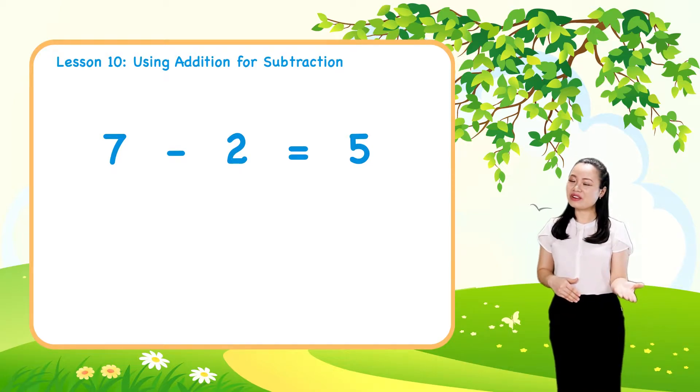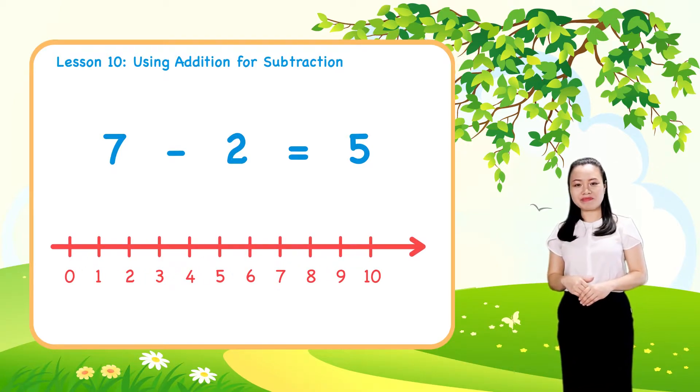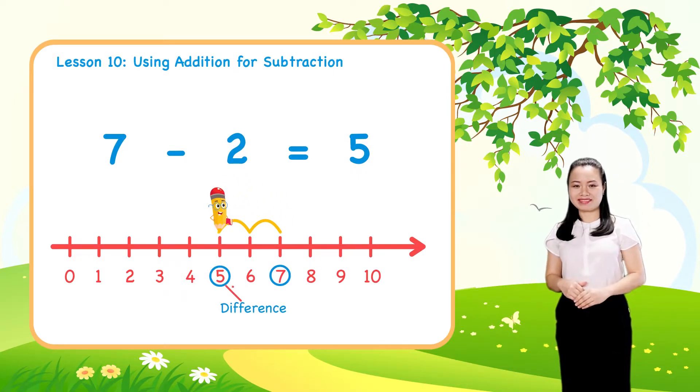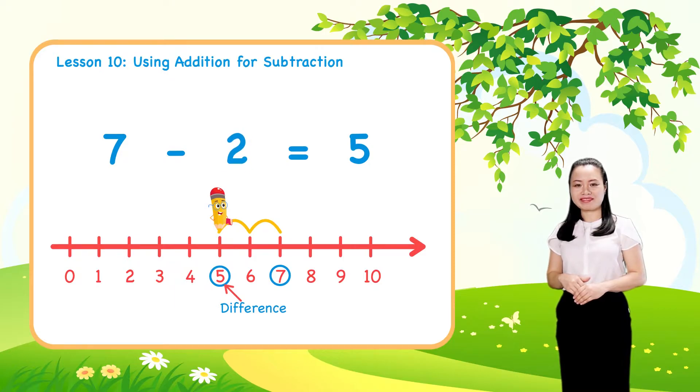We can also use the number line to do subtraction like this. So we can also find 7 minus 2 equals 5.